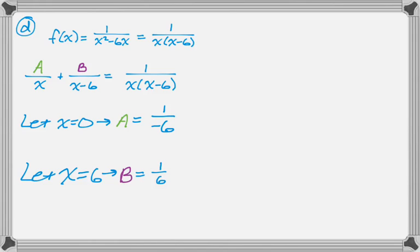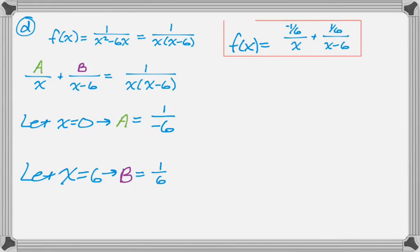And if I let x equal 6, I cover up the x minus 6 on the right-hand side, plug in 6, and I get B is 1/6. So f(x) is actually negative 1/6 over x plus positive 1/6 over (x minus 6). So that's the decomposition.